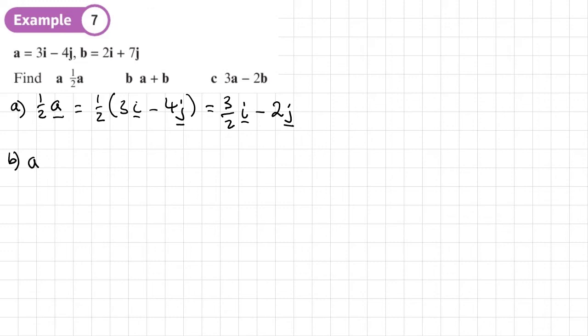Part B, we want to do A plus B. So again, like algebra, we're going to do 3I minus 4J. Notice how I'm underlining the I's and J's. Plus 2I plus 7J. So now we just collect the like terms. 3I plus 2I is 5I. And then negative 4 plus 7 is going to be plus 3J.